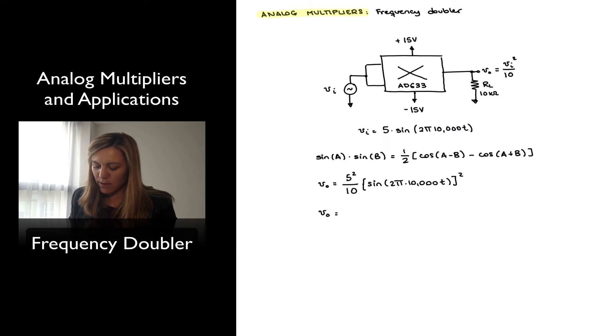And I can rewrite that as 5 squared is 25 divided by 10 is 2.5. And now I'm going to apply my trigonometric identity since I have essentially sin of 2π·10kt times sin of 2π·kt. So it's essentially this equation except A and B are equal to each other.